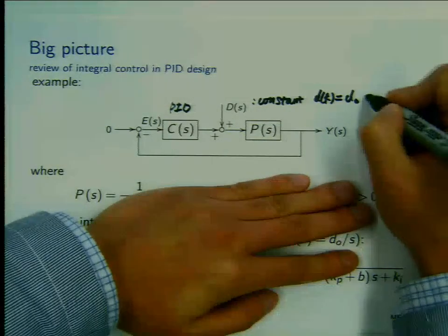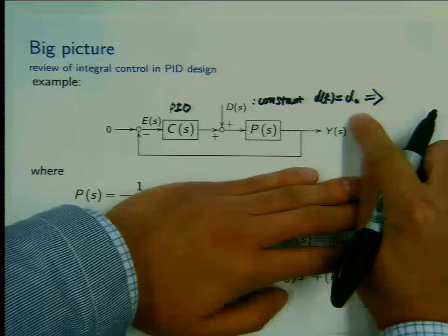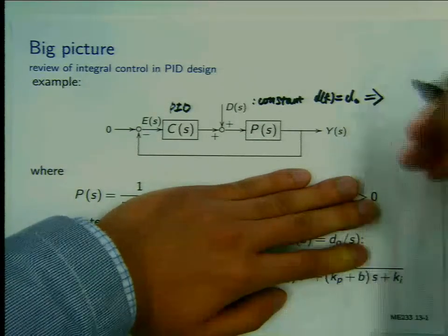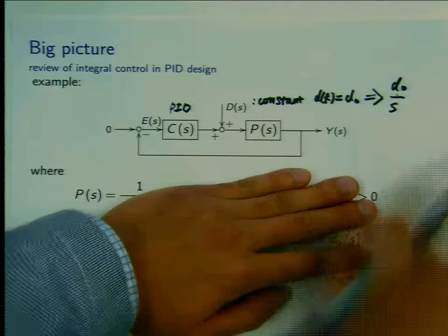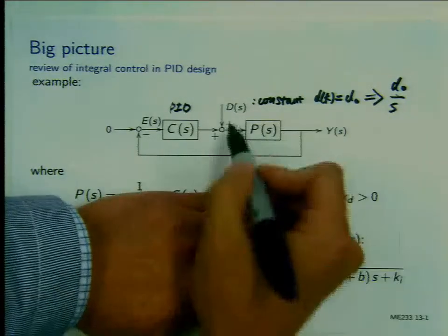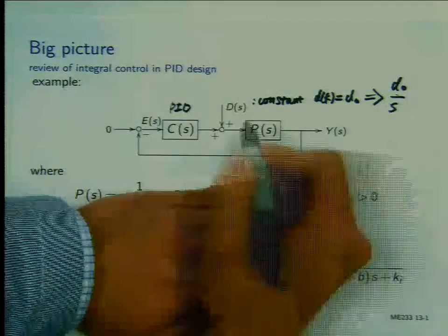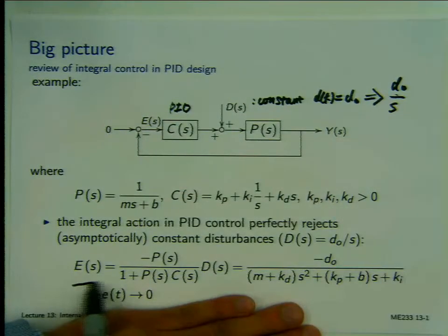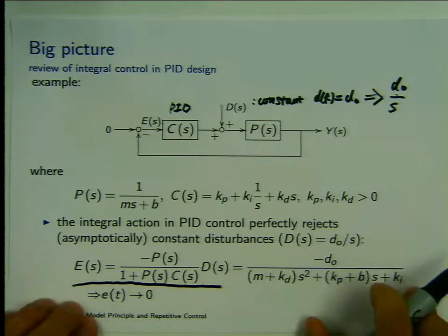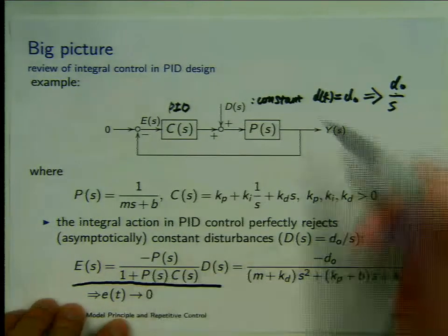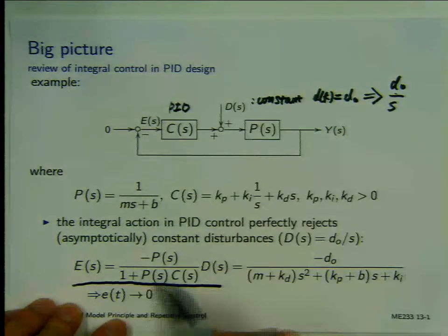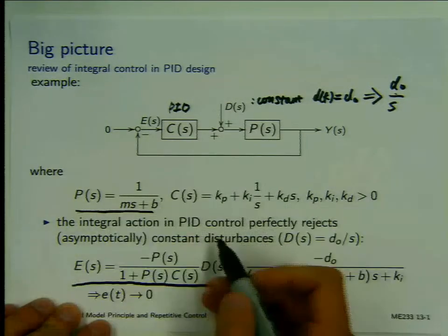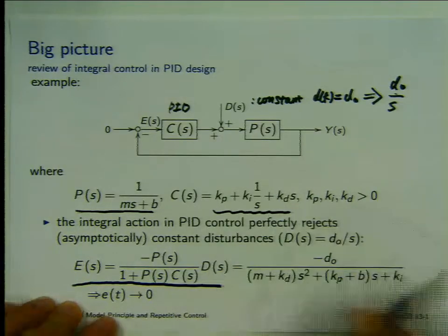Now, what is the Laplace transform for constant disturbance? It's d0 divided by s. You can analyze how y(s) depends on d(s), assuming zero reference. You can write down the transfer function between the disturbance and the error, which is negative P divided by 1 plus PC. For a simple example of a first-order plant with a PID controller, you can do the computation.